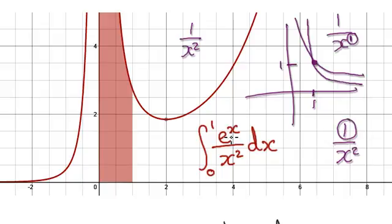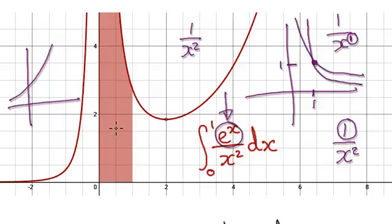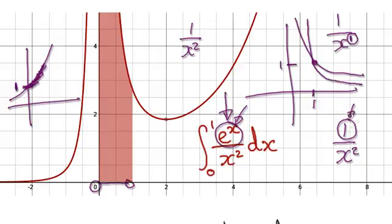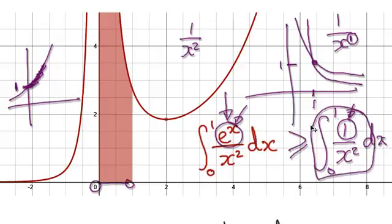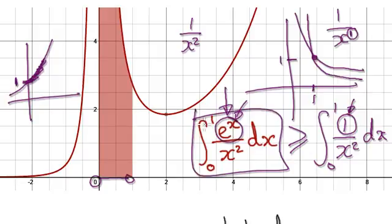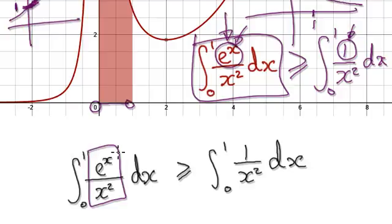If you look at this, if you look at e to the power of x — e to the power of x looks like this — from 0 to 1, this is going to be a positive amount. It's going to be a positive amount, but it will definitely be bigger than 1. So the smallest amount here is 1. If you make this the smallest amount, then we can say that this thing here must be smaller or equal to this thing here. This thing here will always be greater or equal to this thing here.